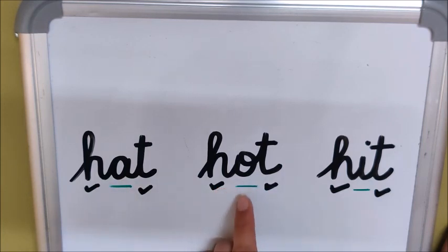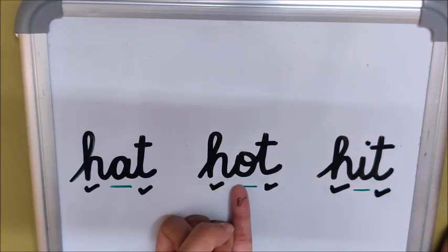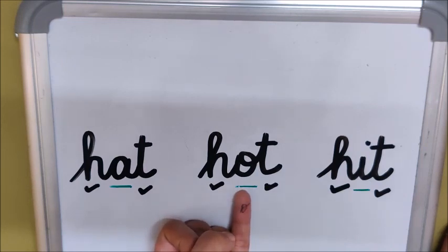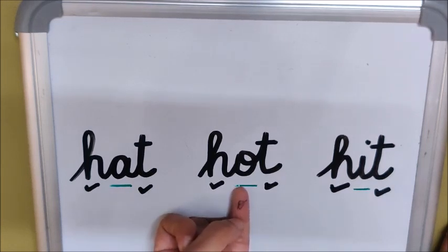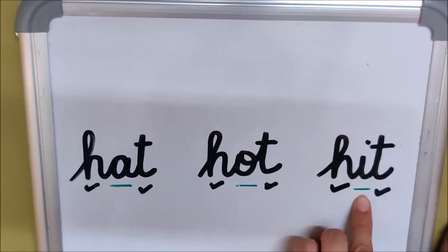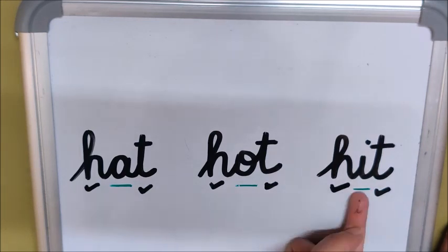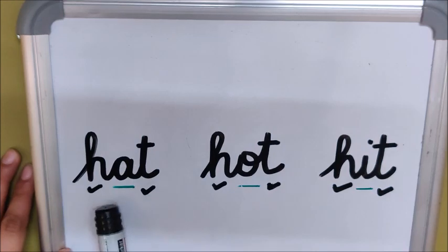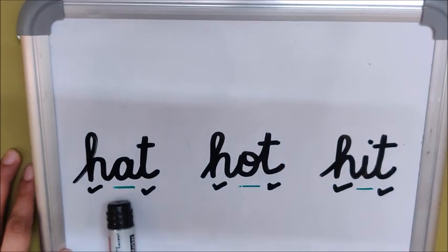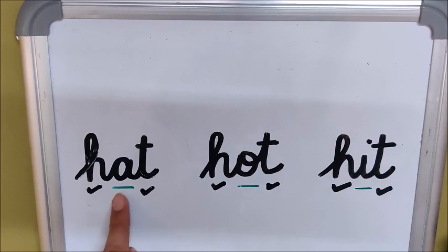'Hot' — the middle sound is 'oaa', so this word is an 'oaa' vowel word. The middle sound is 'oaa', that is why it is an 'oaa' vowel word. 'Hit' — what is the middle sound here? 'I', 'ee'. So 'hit' is an 'i/ee' vowel word, because the middle sound is 'i/ee'.